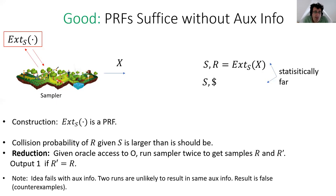This proof idea fails badly in the setting with auxinfo. The reason is that if you take two runs of the sampler, they're unlikely to give the same auxinfo, and therefore you cannot compare the two runs. In fact, not only does the proof idea fail, the result itself is false — we have counterexamples where PRFs are not good extractors in the setting with auxinfo. So in that setting we have to work harder, and a large part of the paper addresses constructions in the setting with auxinfo, though I don't have time to get into those.